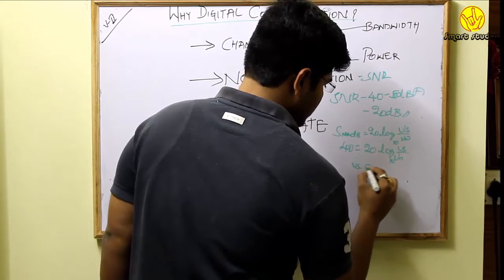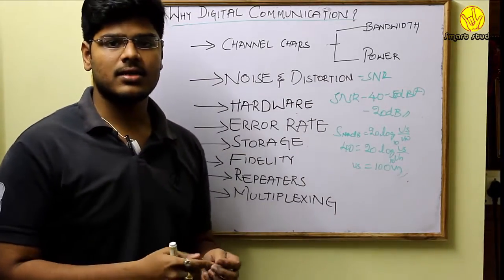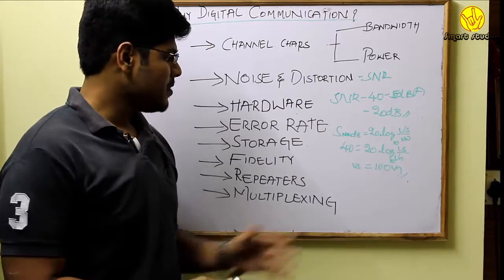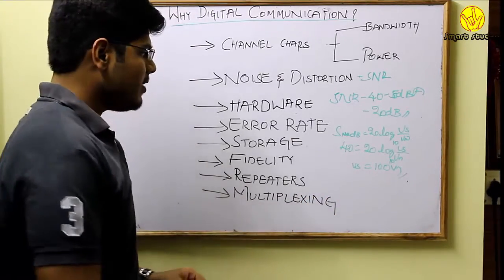That is, for an analog signal to properly reconstruct a message signal, the voltage signal has to be at least 100 times the voltage of the noise at the receiver.